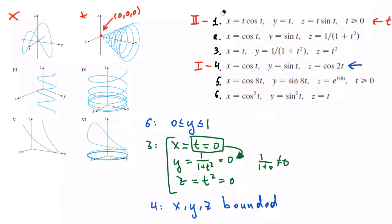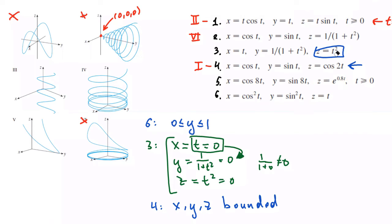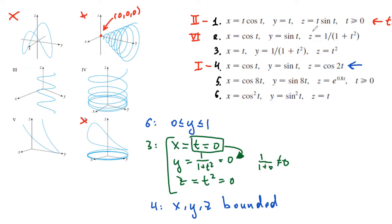Then graph number 6 corresponds to equation number 2. The reason is that for all other remaining graphs, the z component is unbounded — when parameter t goes from 0 to plus infinity, z goes to infinity. The only equation where z is bounded as t increases is equation 2, because t is in the denominator, so as t gets bigger and bigger, z gets smaller and smaller. The biggest value of z is when t equals 0, giving z equals 1.